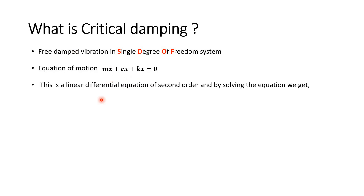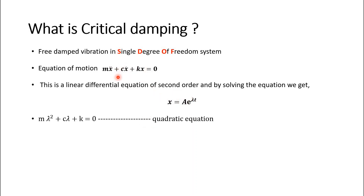Since this is a linear differential equation of second order, the solution is x = A·e^(λt). When we substitute x and its derivatives, we get the characteristic equation: mλ² + cλ + k = 0.